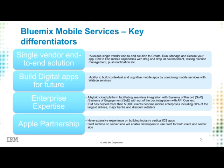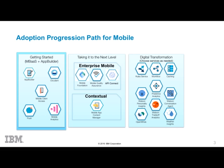Bluemix allows you to build cognitive and contextual mobile applications by combining mobile services with Watson services. IBM brings its unique expertise of having helped more than 50,000 clients to become mobile enterprises, including 80% of the largest airlines, major banks, and discount retailers. Bluemix is a hybrid cloud platform facilitating seamless integration with systems of record and systems of engagement, with out-of-the-box integration with API Connect.